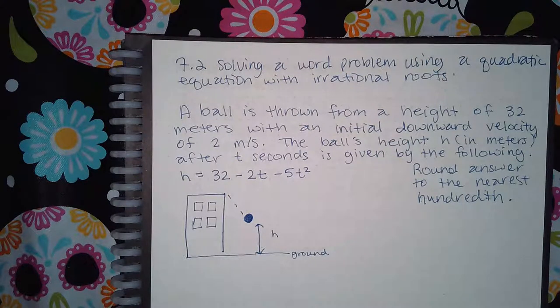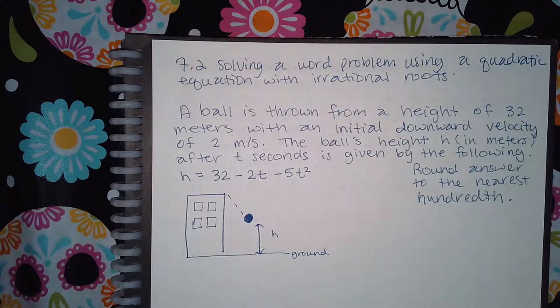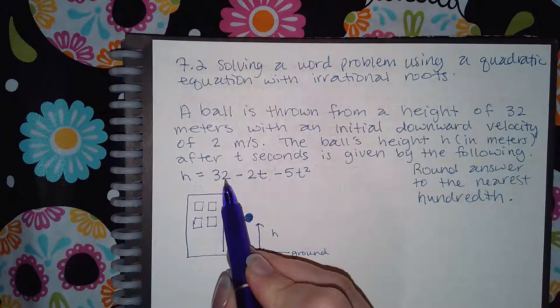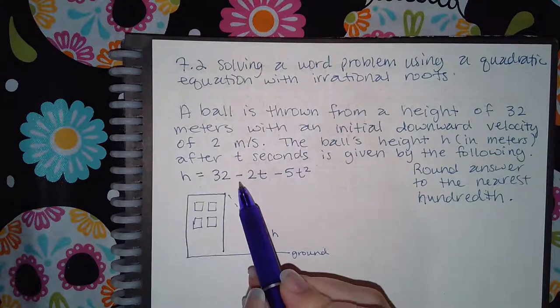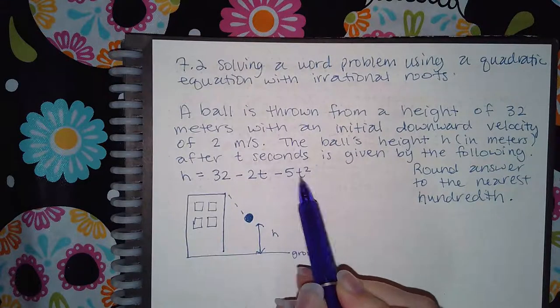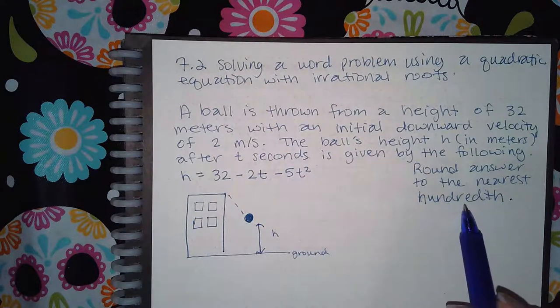A ball is thrown from a height of 32 meters with an initial downward velocity of 2 meters per second. The ball's height, h in meters, after t seconds is given by the following: h equals 32 minus 2t minus 5t squared. This 32 has to do with gravity. The problem says to round the answer to the nearest hundredth.